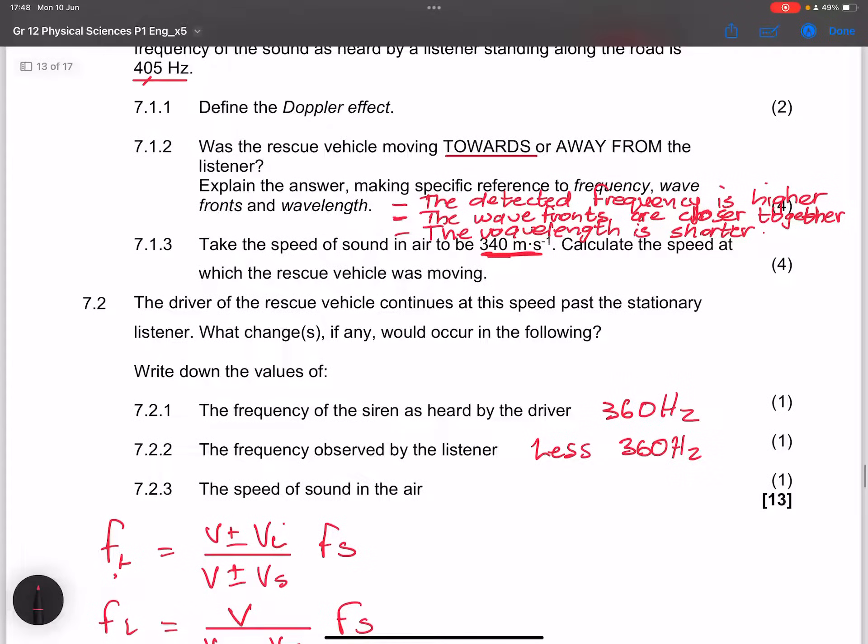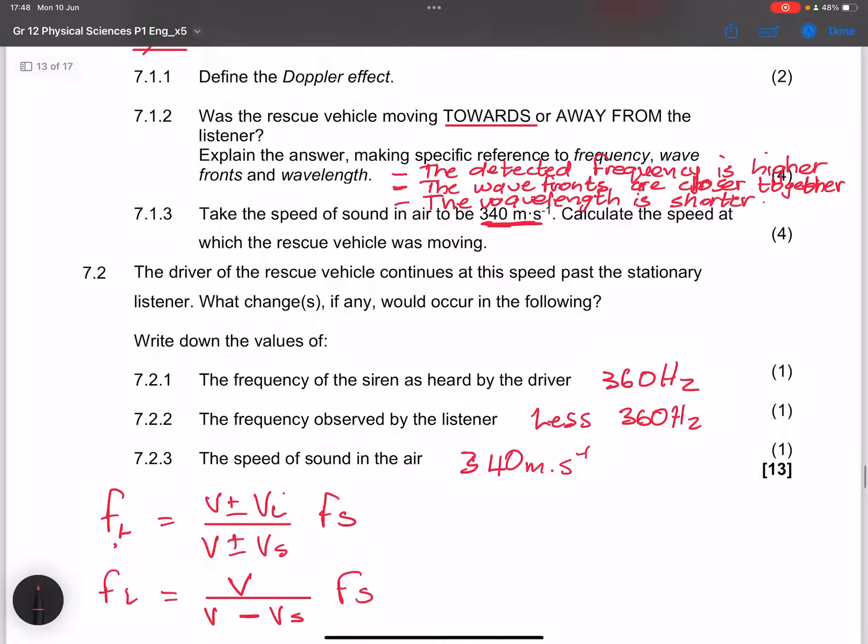And then they say the speed of sound in air. Remember, that doesn't change. That would remain the same. So this would actually have no change. So it would be 340 meters per second. So that is how we're going to explain that. And essentially, ladies and gents, that brings us to the end of this question. 13 marks in the bag. And I know that you would get it absolutely correct. Let's go to the next question.